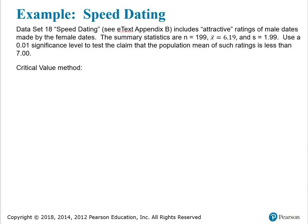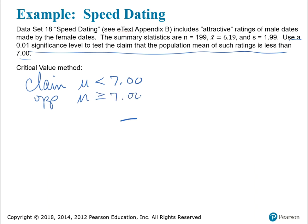We're going to use the critical value method. The very first thing that we want to do is write the claim and its opposite in symbol form. The claim is that the mean is less than 7.00. The opposite of the claim is the mean is greater than or equal to 7.00.